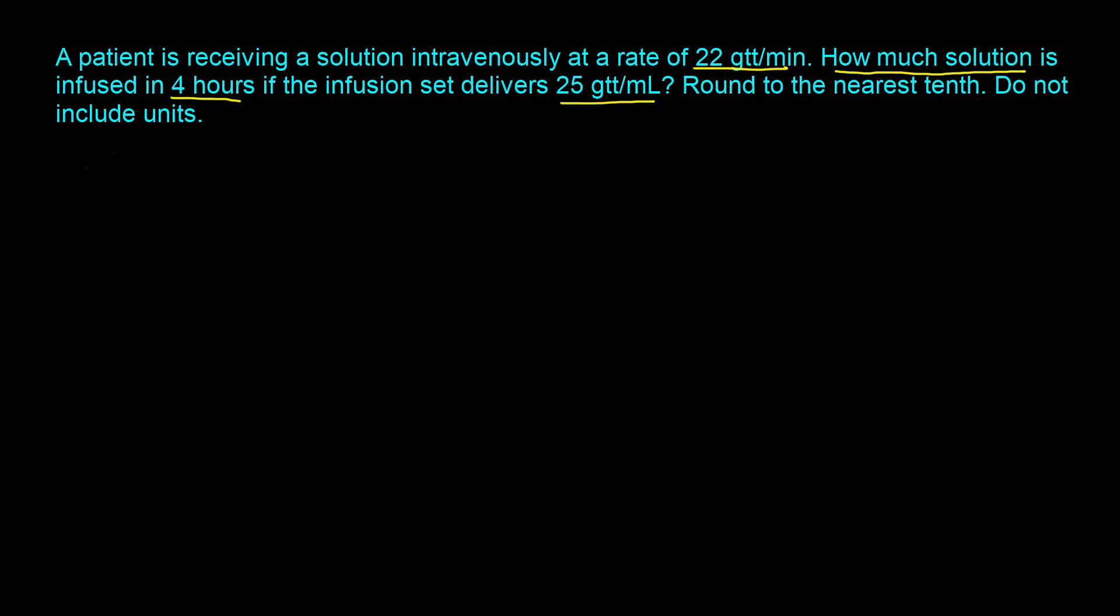What that would look like is you have your 22 drops per minute. Now we need to get rid of the minute term from the denominator. We need the time component and that will be the 4 hours, so we multiply this by 4 hours.